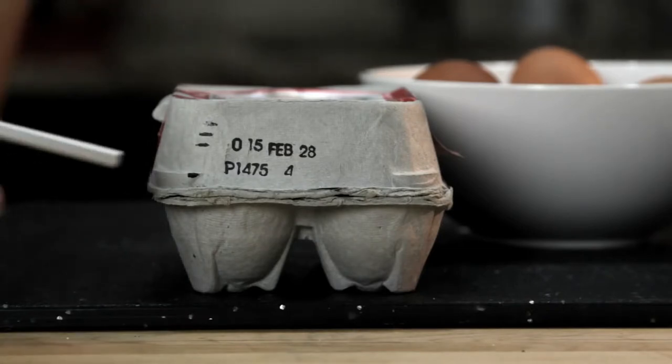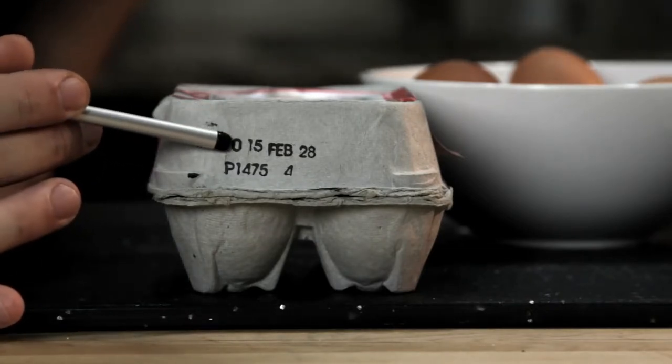There are two ways to tell how fresh an egg is. The first is to check something called the Julian date. As long as it's packed in the US, every carton of eggs has a number between 000 and 365 on it. And that number corresponds to the day on which the egg was cleaned and packed.